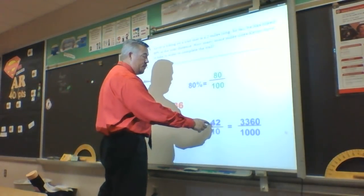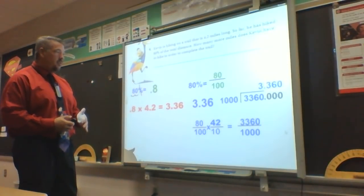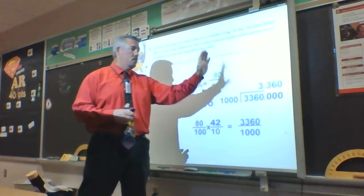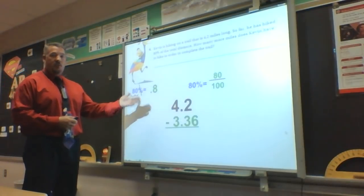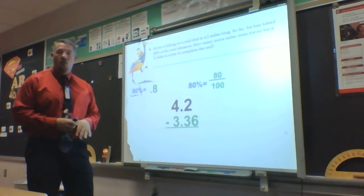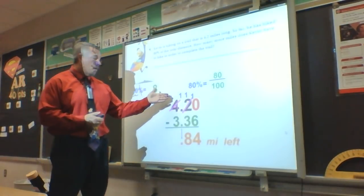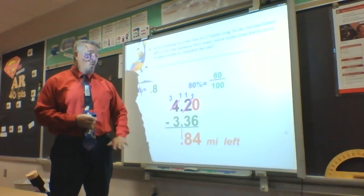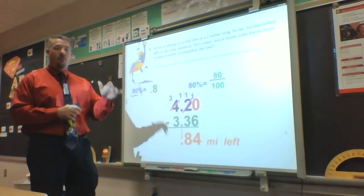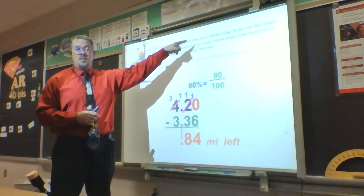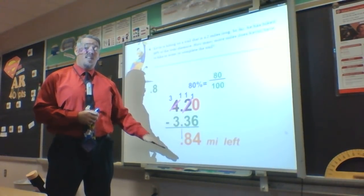With the fraction method: 80 times 42 gives me 3,360, and 100 times 10 gives me 1,000. Dividing those gives me 3.360, which drops to 3.36. Using the decimal: 0.8 times 4.2 gives me 3.36. So Kevin has gone 3.36 miles and has a total of 4.2 miles. Subtracting, I borrow and get 0.84 miles remaining. Since the original problem was given as a decimal, my answer also needs to be a decimal.